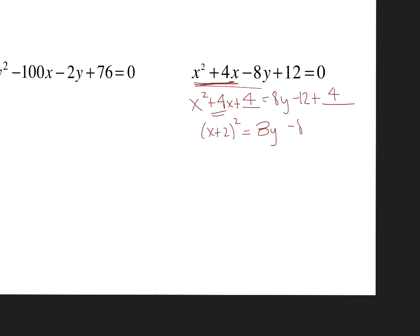I factor the left side, combine like terms on the right, then divide everything by 8 to get (1/8)(x + 2)² = y − 1. Moving the −1 to the other side gives the parabola in the exact form I'm used to, where I can identify the vertex and the value of a.